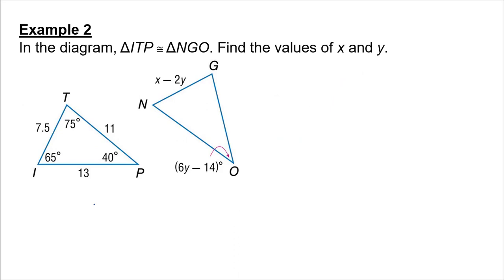In the diagram, ITP is congruent to NGO. Find the values of x and y. Very similar to what we just did. I'm looking at this diagram and noticing right away NG has two variables. I'm going to see if I can solve for one of those variables. I have angle O, which is listed as the third angle, so that has to be congruent to angle P.